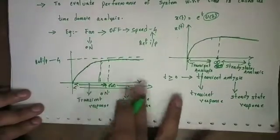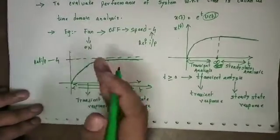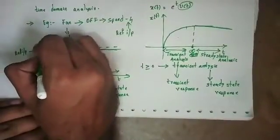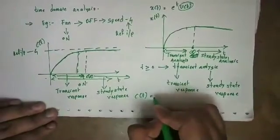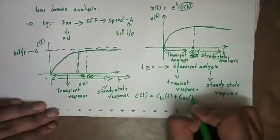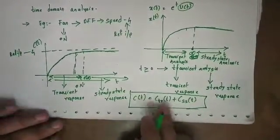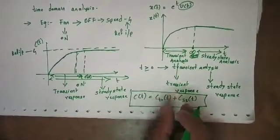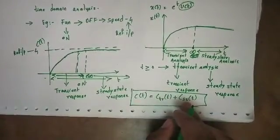As we have our transient response — that is the first half of the response — and the other part is the steady state response. Suppose this output is c(t). If n is the response, then c(t) equals c_transient(t) plus c_steady_state(t). Very very important. The output is the total response. We divide the response in two parts: the sum of transient response and steady state response.